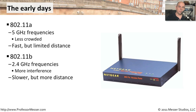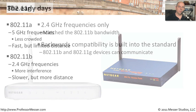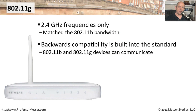Because these two standards were so different, there was no need to be compatible — they used different frequencies and communicated in completely different ways. When 802.11g came out, however, there was a need to be more compatible. Because 802.11g used 2.4 gigahertz frequencies, it matched and was backwards compatible with 802.11b. In fact, it was built into the standard that 802.11g devices and access points had to be able to communicate with 802.11b devices.